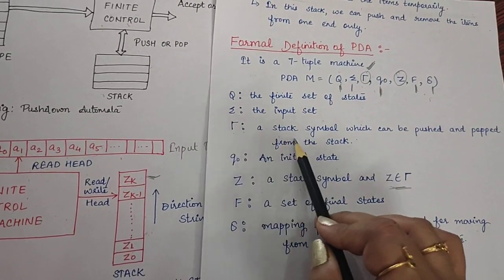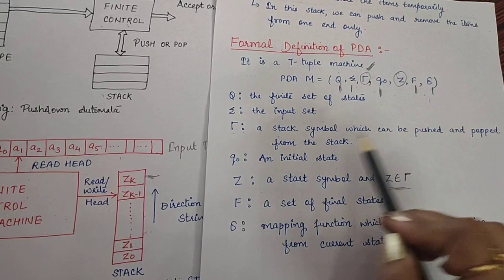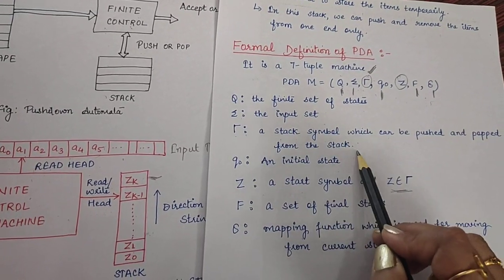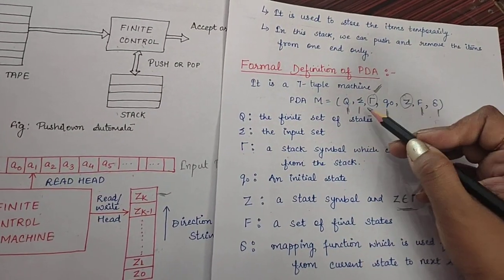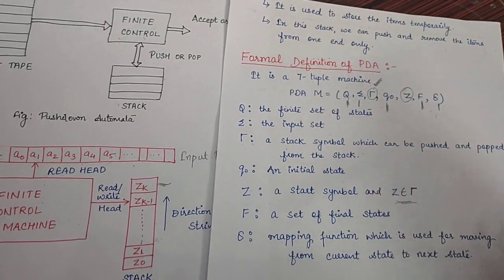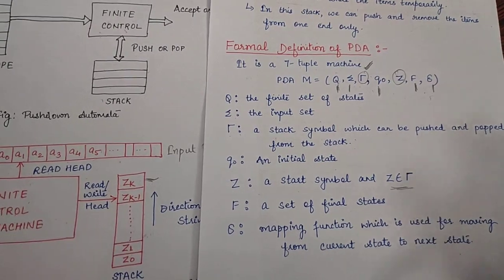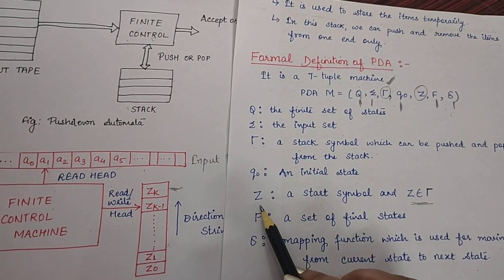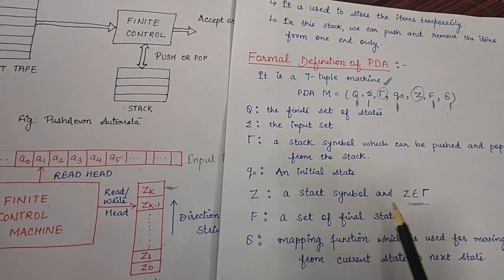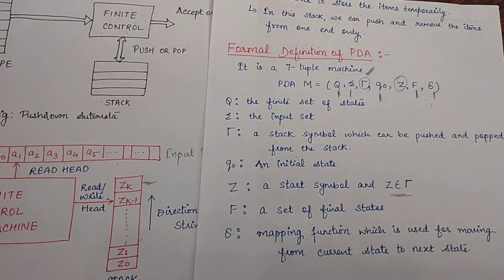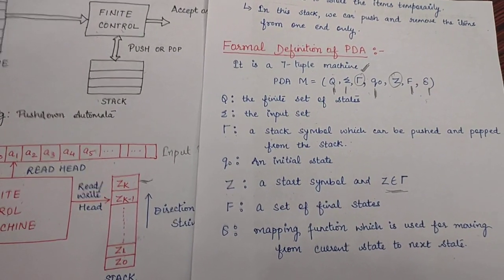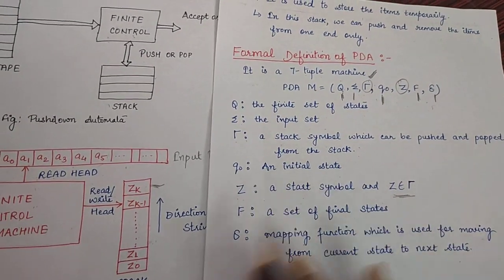Here tau is a stack symbol which can be pushed and popped from the stack. Either you can say we can have same similar kind of symbols to sigma or we can use different symbols as well. Z is a start symbol and it belongs to tau only, that it is a member of this tau set.